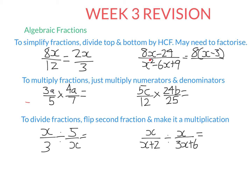Now I simplify the bottom, which is a quadratic with three terms. I need two numbers that multiply to 9 and add to negative 6 — both are negative 3. So the bottom becomes (x minus 3)(x minus 3). I can simplify by crossing off one (x minus 3), since it's being multiplied. I can't just cross off the x alone. The final answer is 8 over (x minus 3).